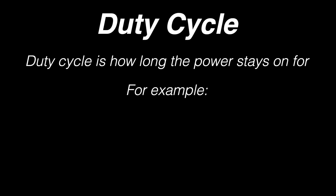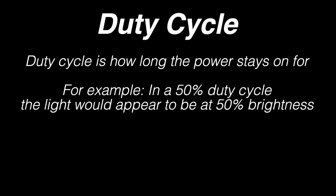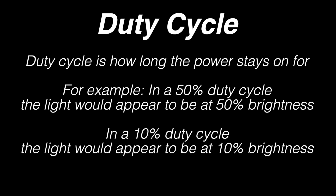PWM's control is called duty cycle. Duty cycle is basically just how long the power is on and how long the power is off. For example, at a 50% duty cycle the light would be on 50% of the time and appear to be 50% brightness, whereas with a 10% duty cycle the light would be on a tenth of the time and look like it's a tenth brightness. So basically, most LED dimmers flicker.